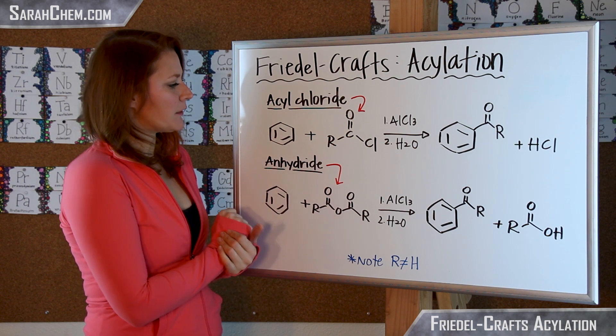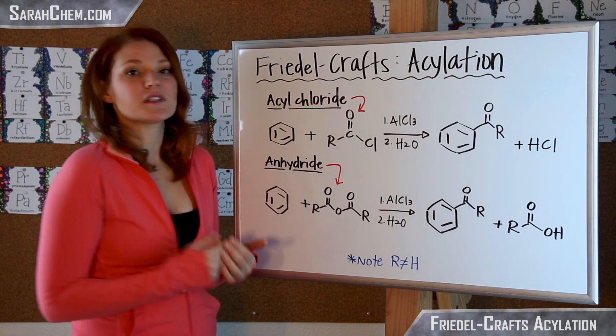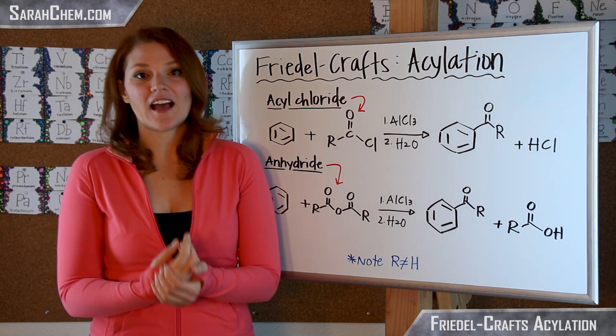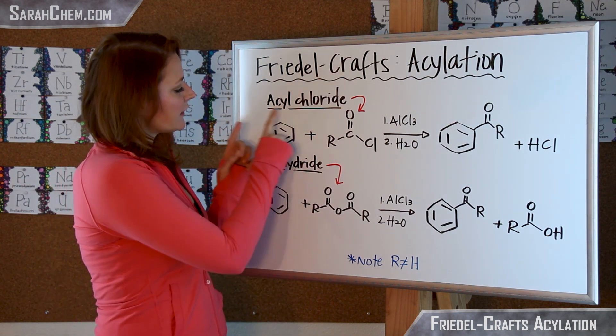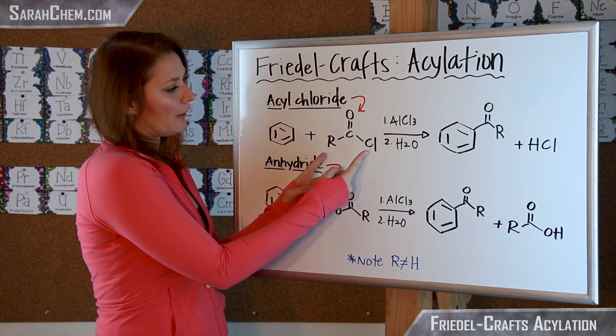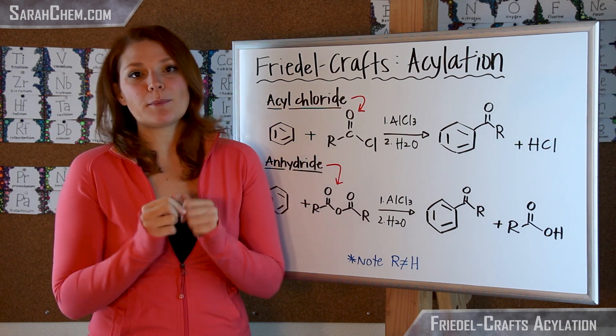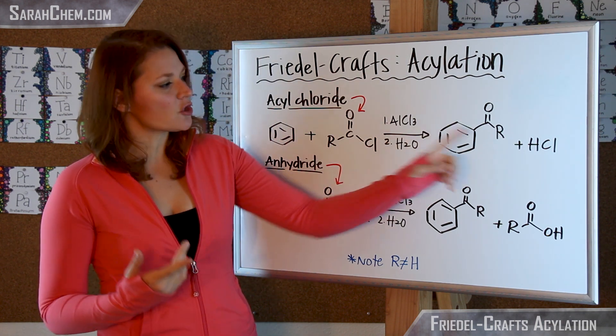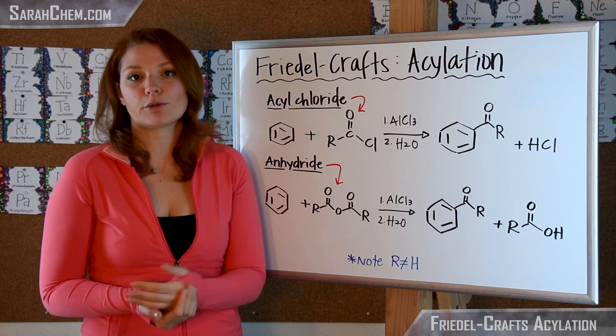Over here you can see we have our benzene group and you can see we can either use an acyl chloride or we can use an anhydride to get this reaction going. So in this case here you have your benzene, you have your acyl chloride, and in this case that R represents whatever the group is, the substituent that you want to attach ultimately to that benzene group.